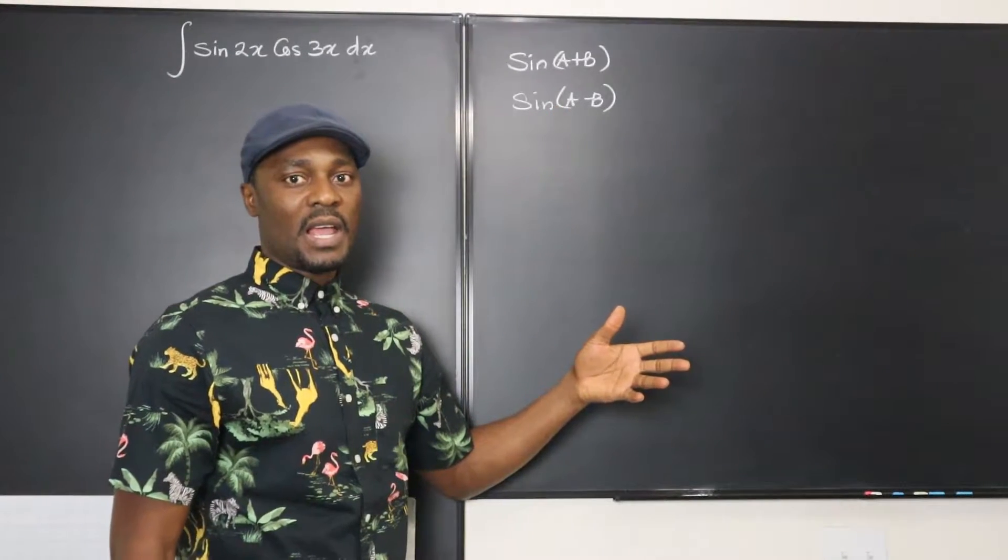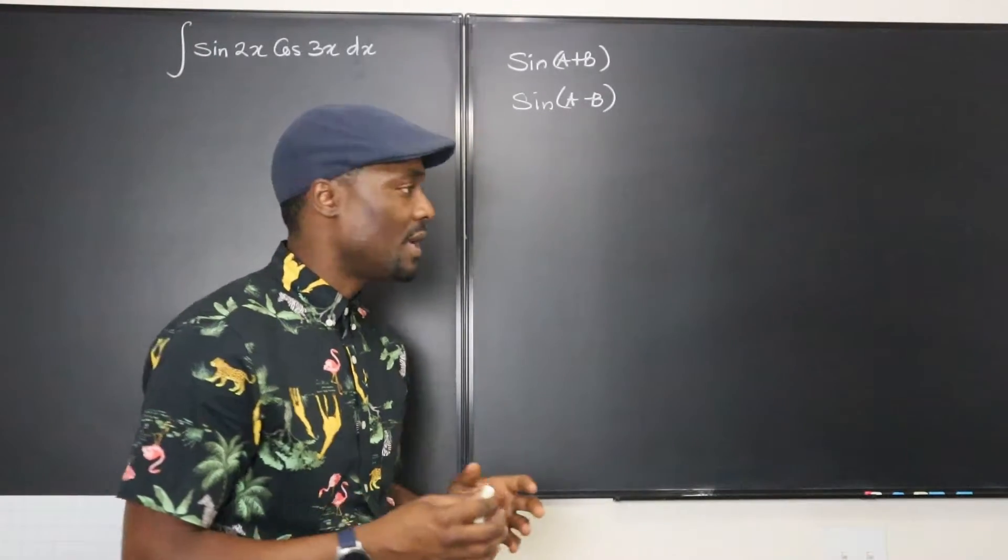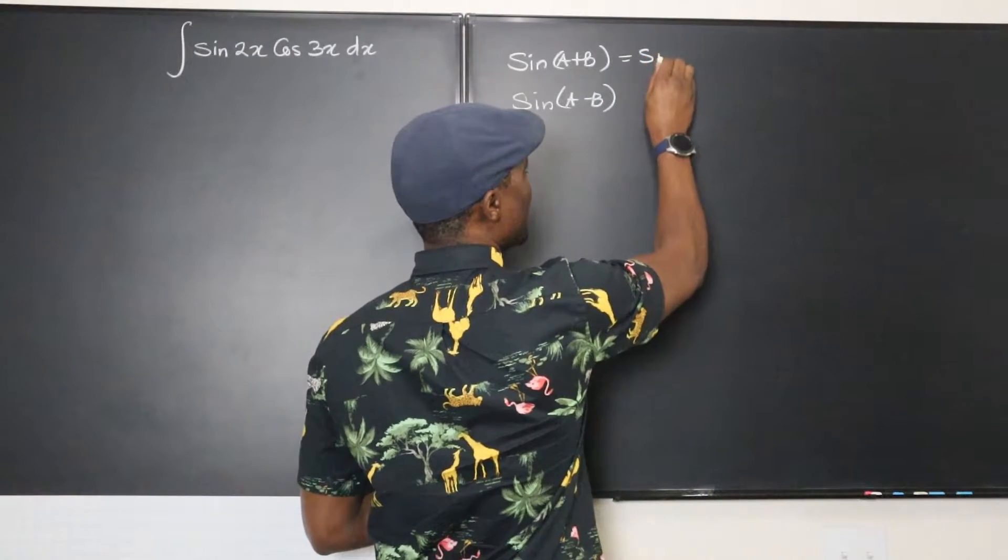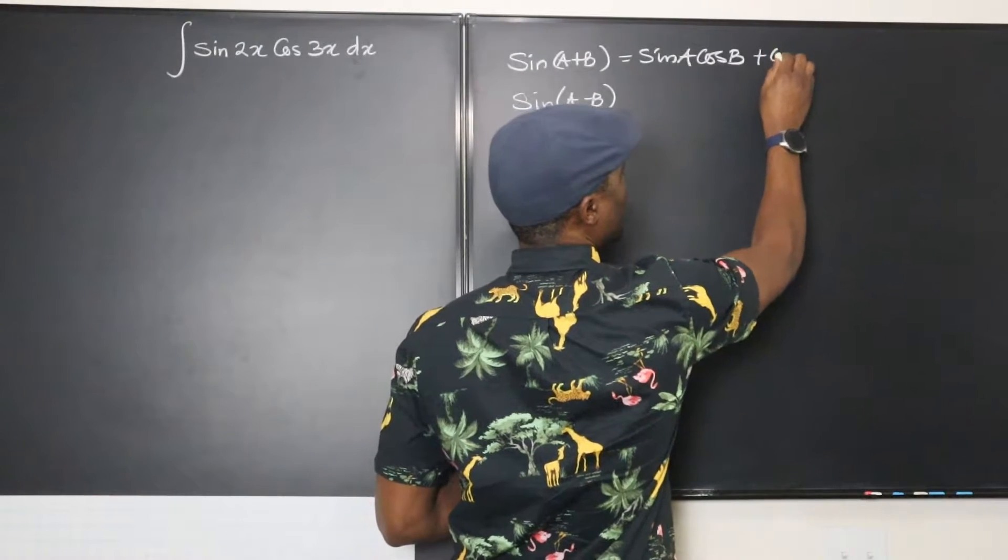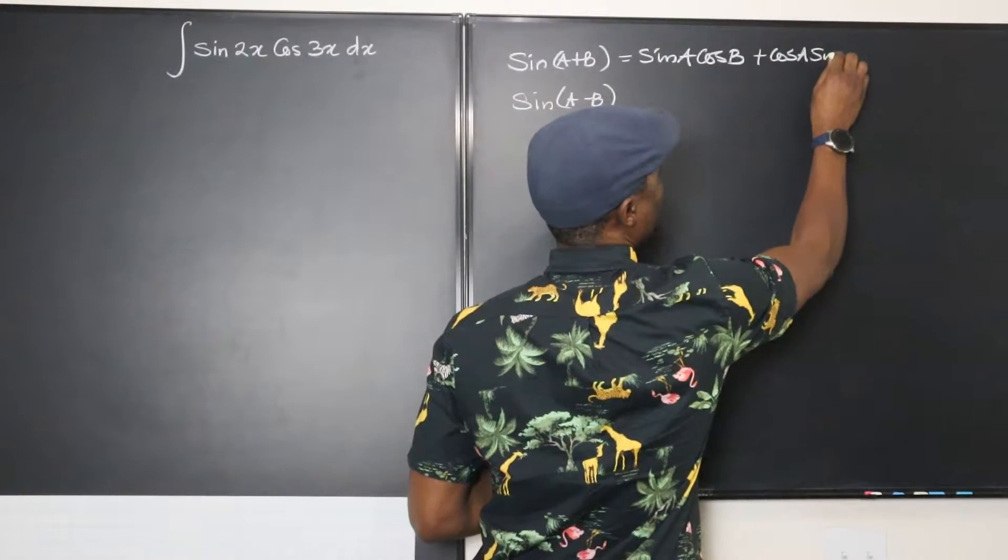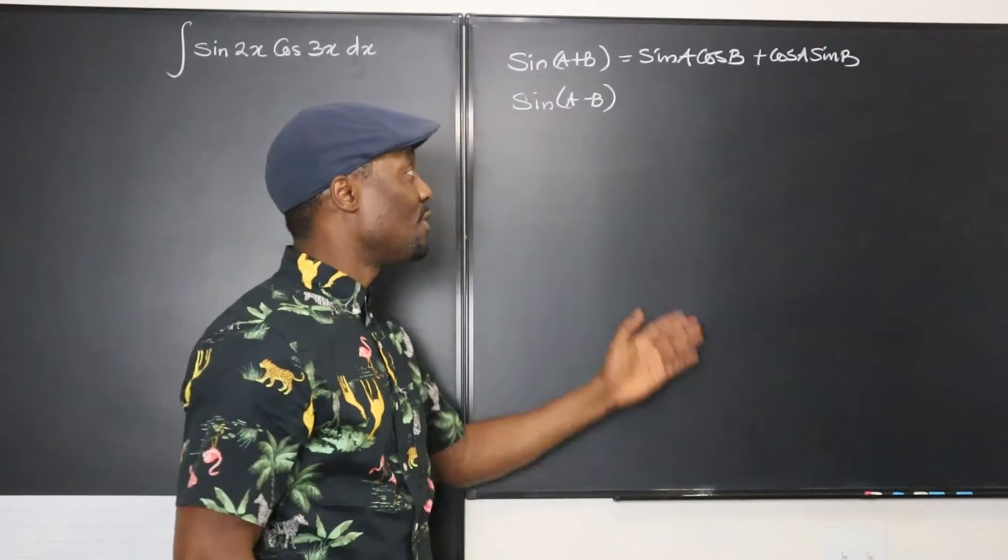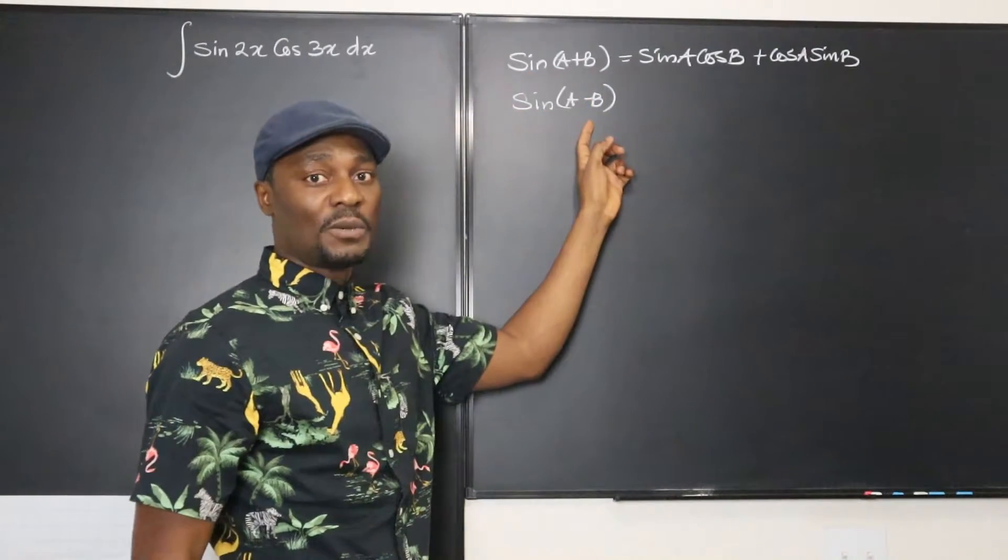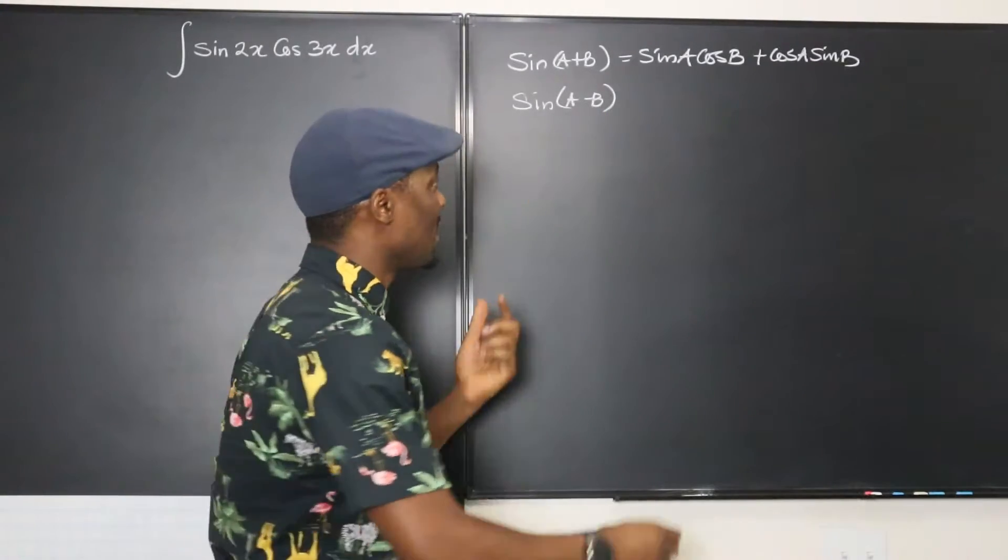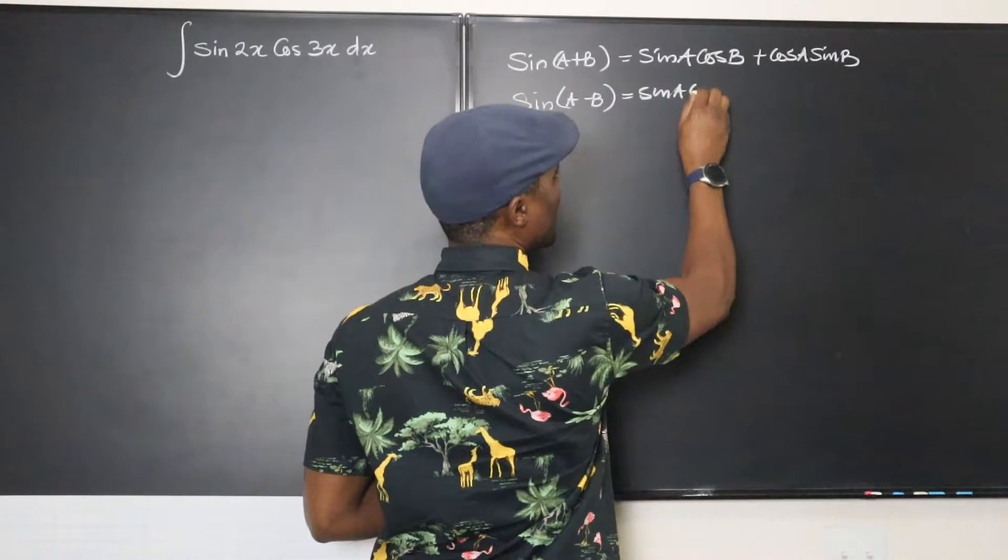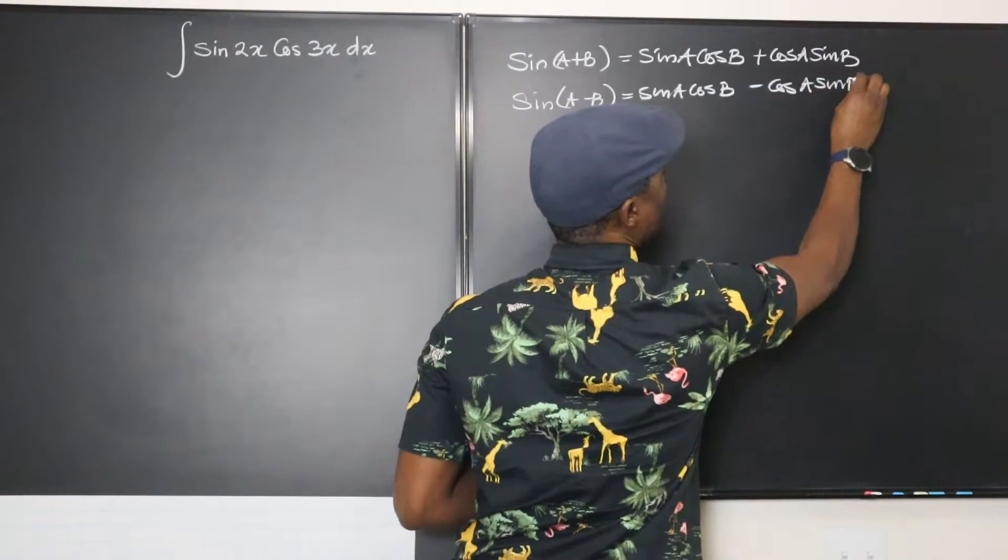Now how do we write sine(a + b) when you're adding two angles together? This is going to be sine a cosine b plus cosine a sine b. Now it's easy to remember because you're repeating the exact same thing for the subtraction, it's just that the middle sign is going to change. So let's repeat the same thing: sine a cosine b minus cosine a sine b.